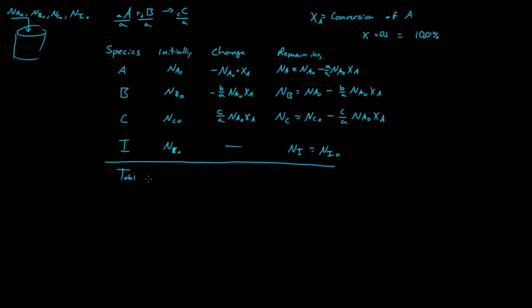So if we were to do the total change in the system, we have N T naught initial moles of T in the system. We're not going to look at the change. We're going to look at just the remaining. Well, the total moles remaining in the system is equal to N T naught minus the change of all this, or plus the change of all this.